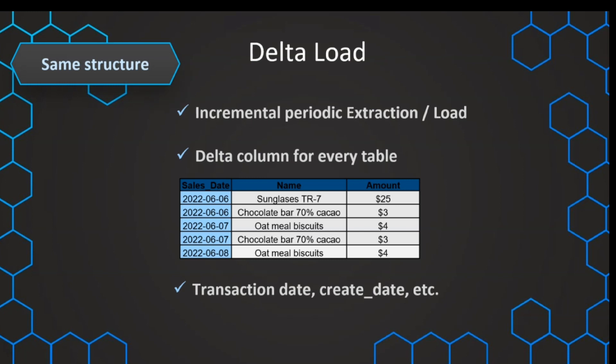Note also that we are not changing anything in the workflow — everything just remains the same. We have the same transformations, so our ETL process has exactly the same structure. It is in fact the same ETL process, except that now we run it periodically and we also have a filter in place on these delta columns. So not all of the data is always loaded, but only the data that has not been loaded before.